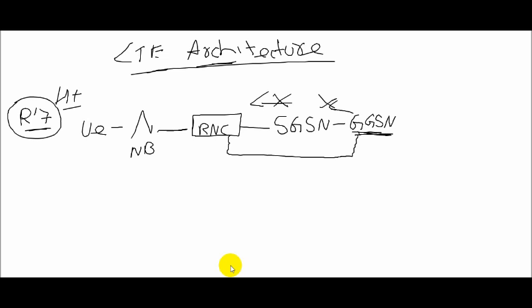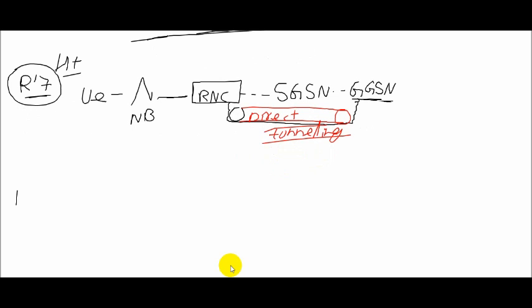The same thing was introduced in Release 7—this direct tunneling method was followed. This SGSN link was just responsible for signaling, and the data was fetched directly from GGSN to RNC. This direct process is known as direct tunneling. This was introduced in Release 7 to cut down the latency and make the speed of data high.